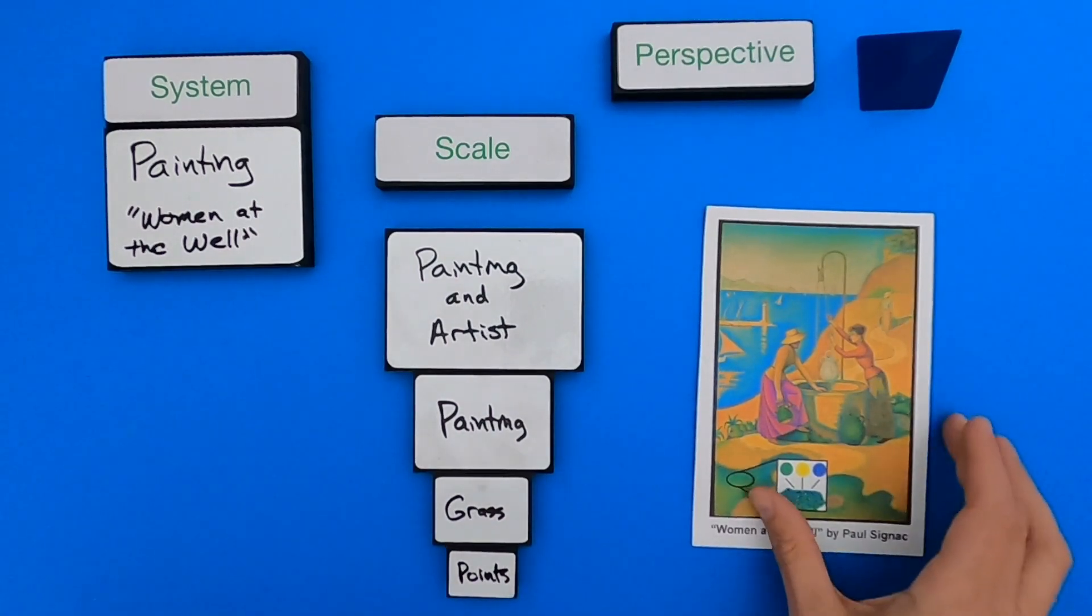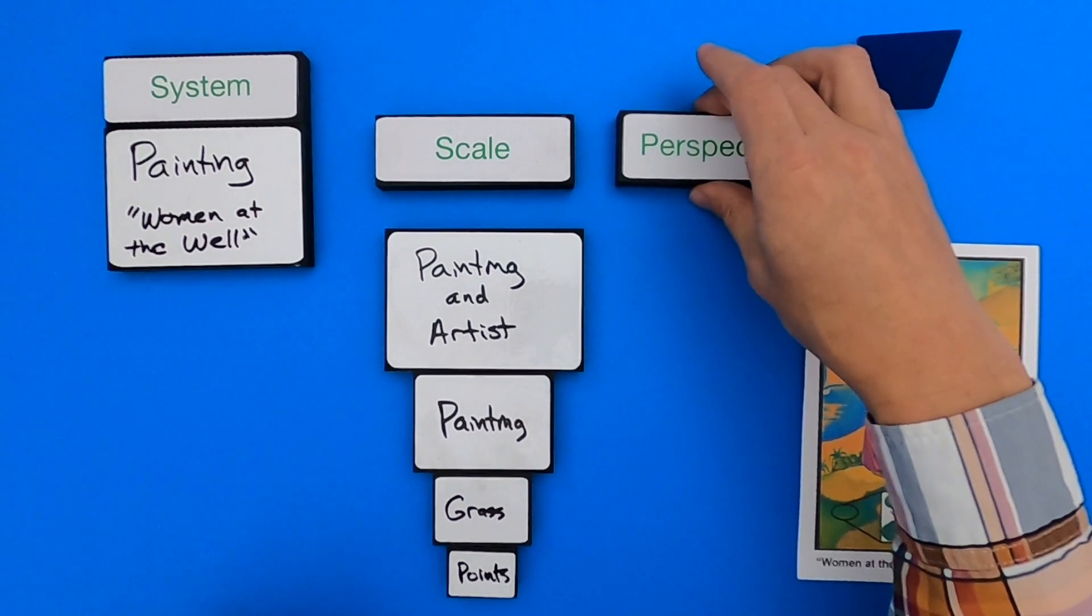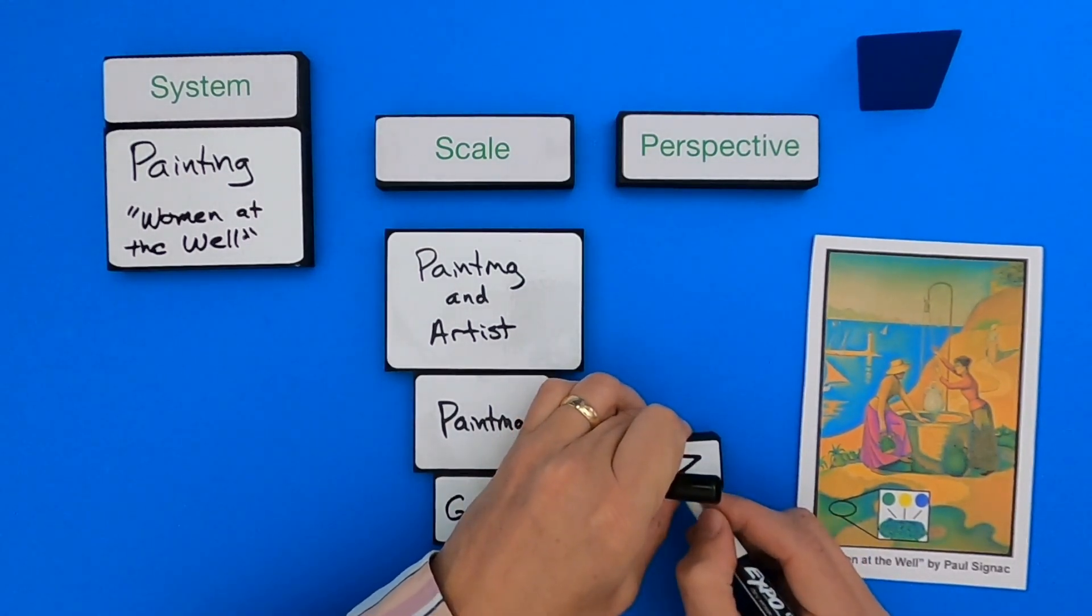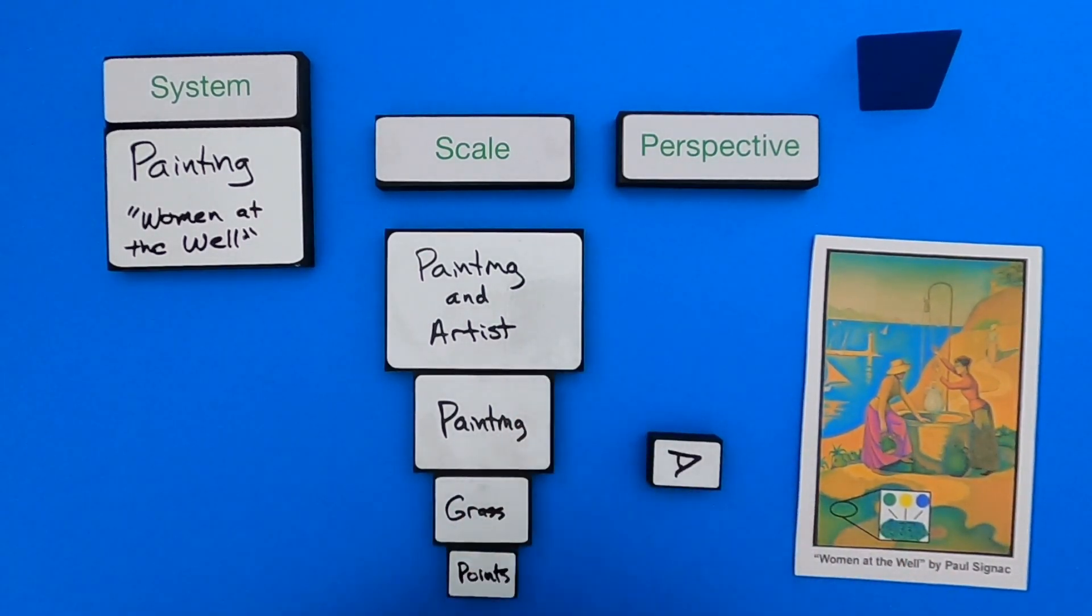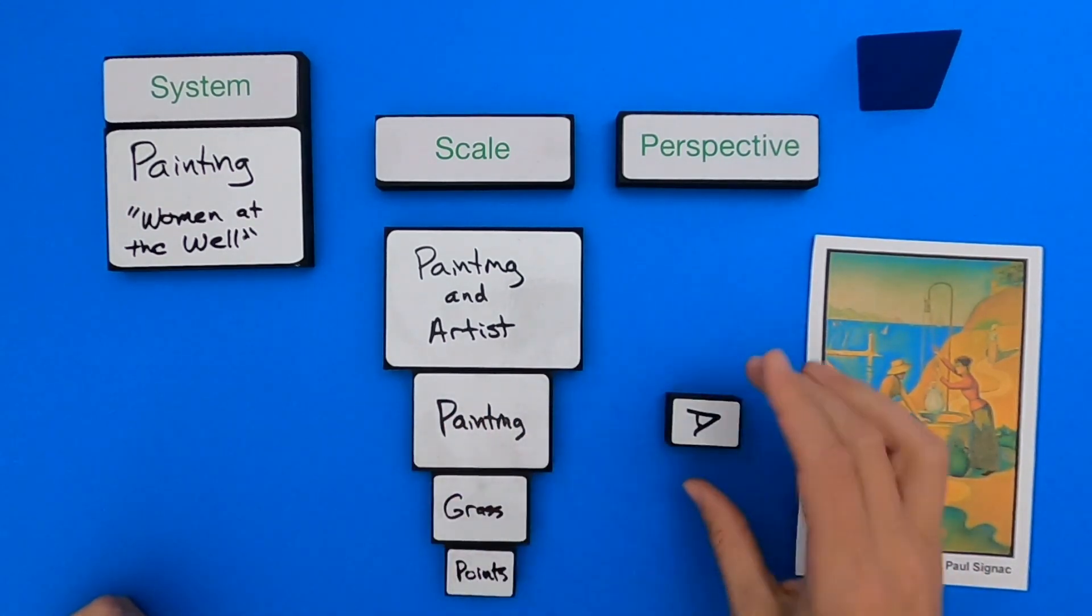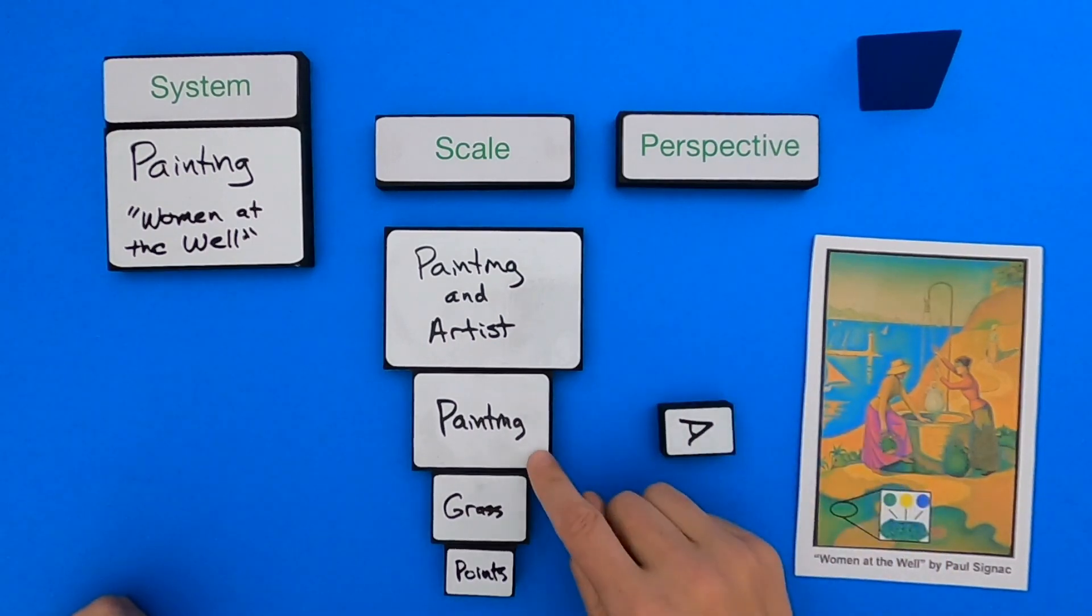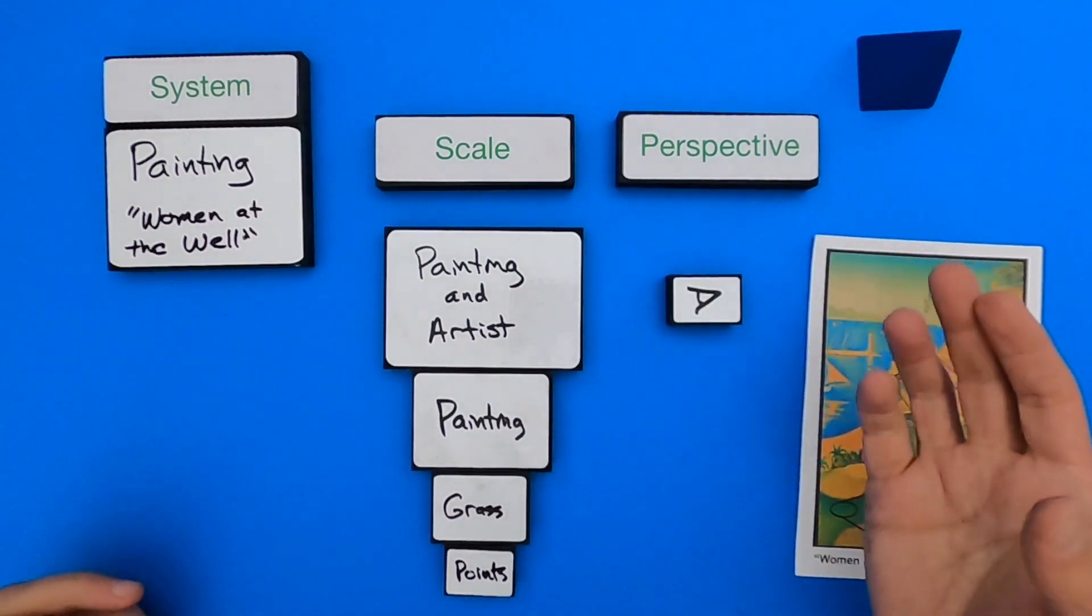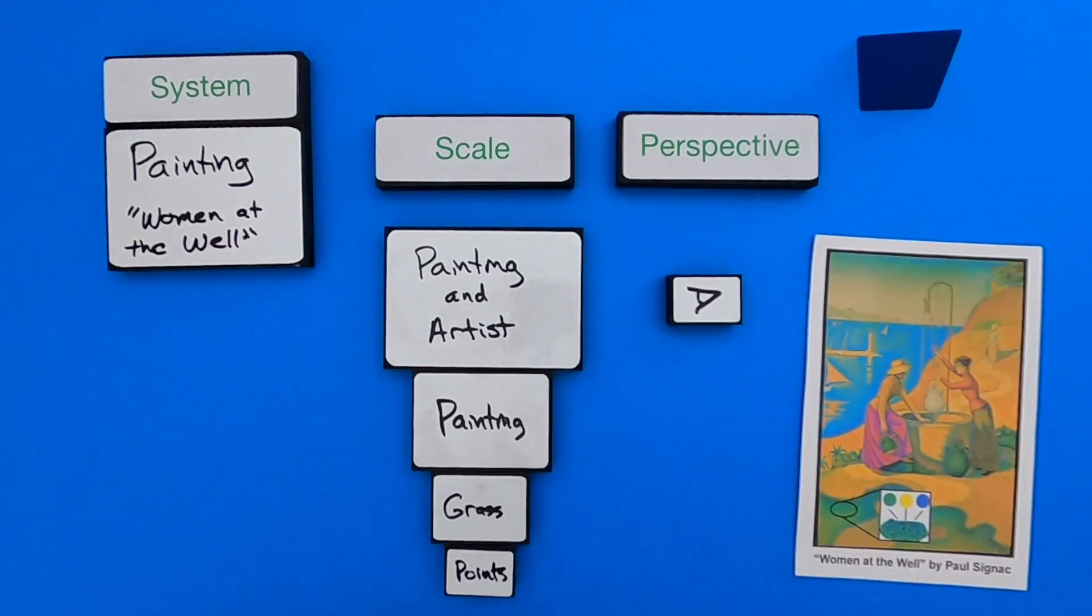The next thing we're going to do is we're going to try to determine what does perspective tell us. And so what is perspective? Perspective requires an observer. So I'm going to put in an eye here. And what that represents is if I am looking at it at the level or the scale level of the painting, what do I notice at this level? And how might that change when I move to a different perspective? And so let's start with the painting.